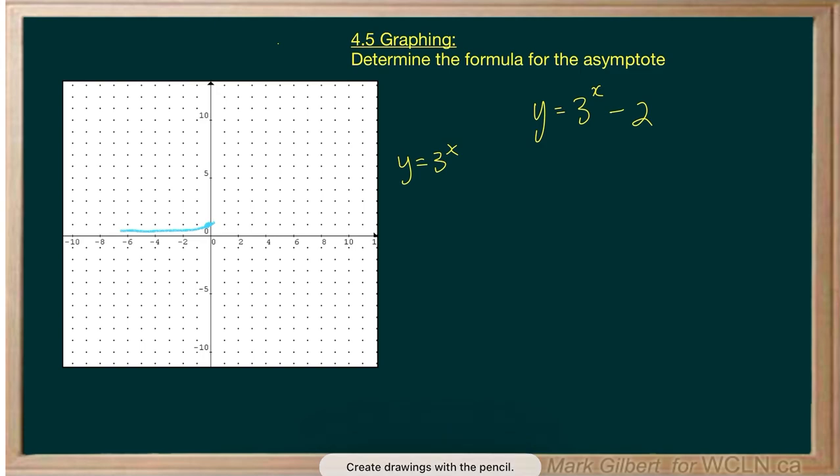We have our point here at 0, 1, at 1, 3, and that's probably enough. So there's my graph, my initial graph.